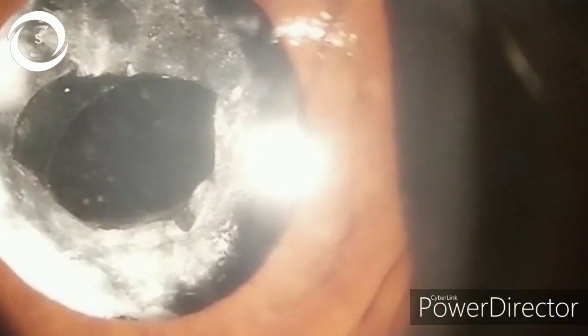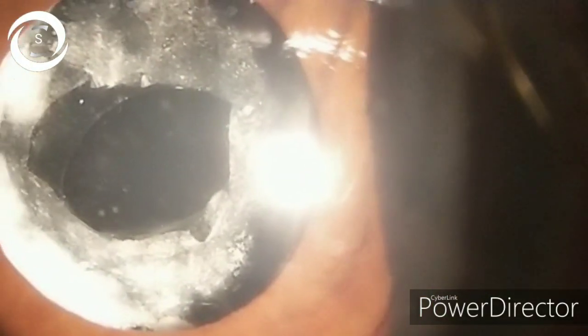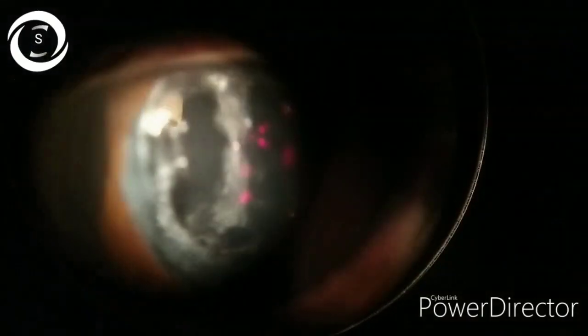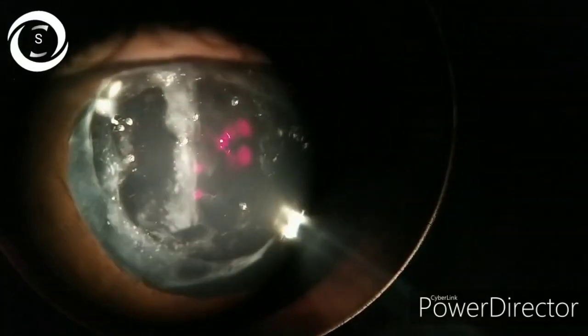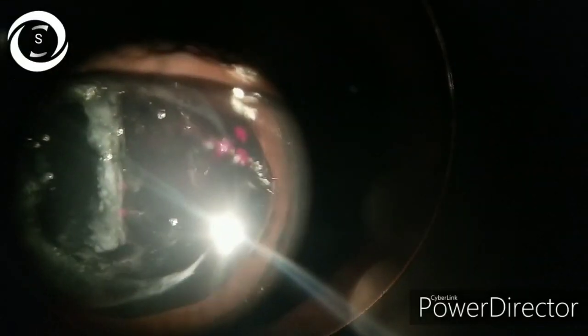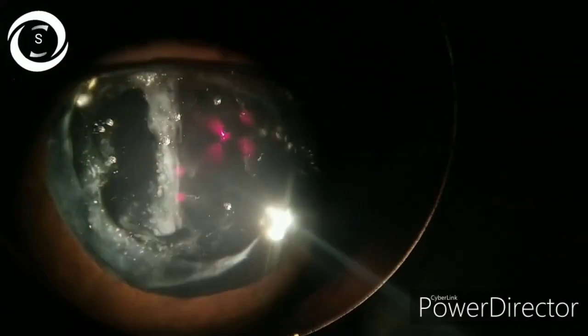In adults during cataract surgery, thorough cortical fibers cleanup with irrigation-aspiration cannula and manual polishing of the posterior capsule to remove all epithelial lens fibers is the best method to decrease its incidence.